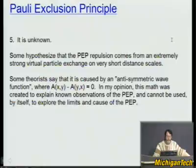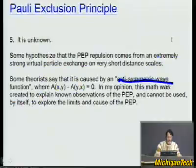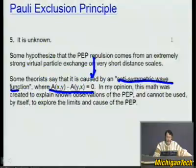Some hypothesize that the Pauli exclusion principle comes from extremely strong virtual particle exchange on very short distance scales. Theorists will tell you that fermions have anti-symmetric wave functions — where you can say things like 'this minus that equals zero.' But whenever anything is zero, in my view, it means we've hit a realm of smallness beyond physical understanding. This math was created to explain known observations of the Pauli exclusion principle, and in my view, cannot by itself be used to explore the limits and cause of the principle.